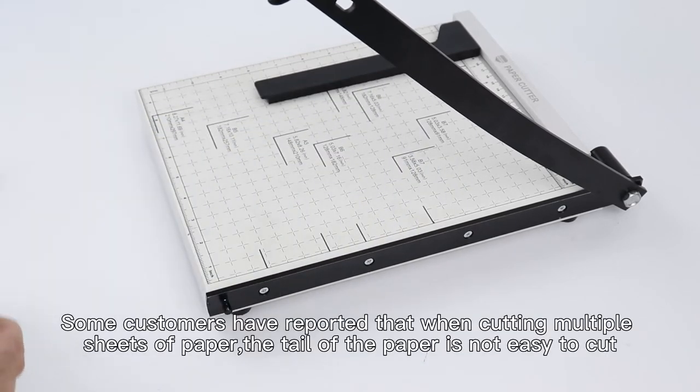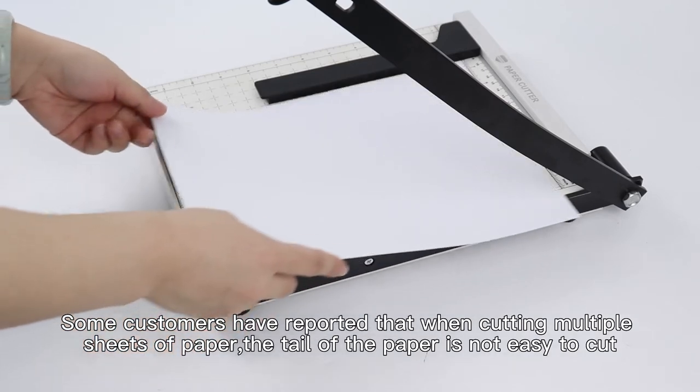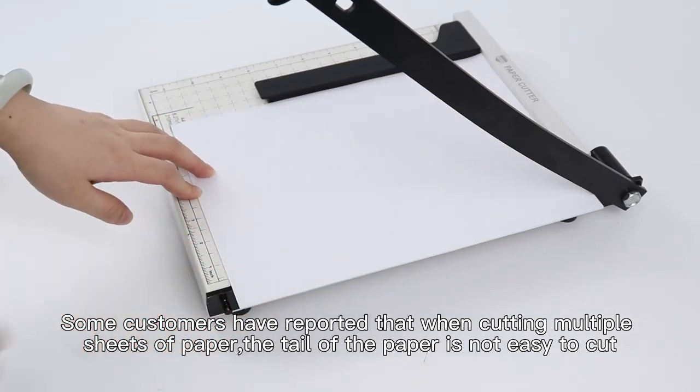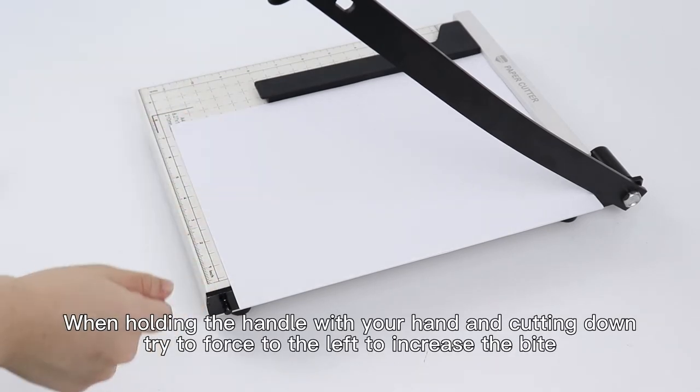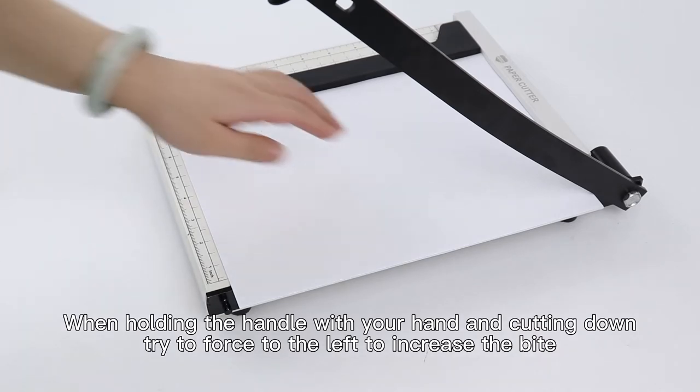Some customers have reported that when cutting multiple sheets of paper, the tail of the paper is not easy to cut. So when holding the handle with your hand and cutting down, try to force to the left to increase the bite.